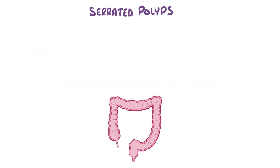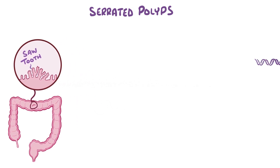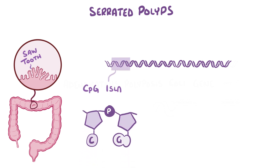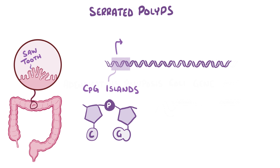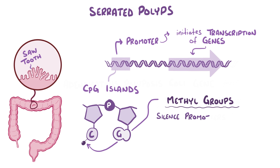Serrated polyps are a second type of polyp, and they get their name because the cells have a characteristic sawtooth appearance under a microscope. Within the DNA of the cells in these polyps, there are specific stretches of nucleotides called CpG islands. CpG islands are found in most promoter regions of genes, which are the DNA sequences responsible for the initiation of gene transcription. In the cells that make up serrated polyps, the nucleotides that make up the CpG islands have methyl groups added to them, and this silences the promoters, which in turn silences the genes that the promoters help to get transcribed.